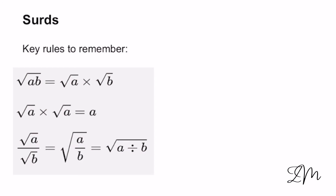There's only three rules. SURDS are just square root numbers. So if you have the square root of AB, you can split it out into √A times √B. In exactly the same way, if you have √A divided by √B, you can put the whole thing over each other. And the really important thing is √A times √A is A — so √2 times √2 is 2, and √3066 times √3066 is 3066.